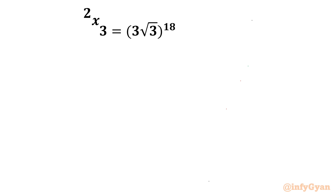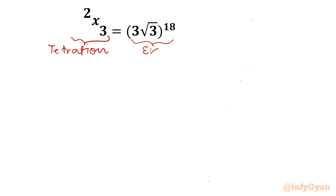We are going to solve today the tetration equation: 3 superpower x superpower 2 equal to (3 square root 3 power 18) whole power 18. The left-hand side is in tetration form and the right-hand side is in exponentiation form.